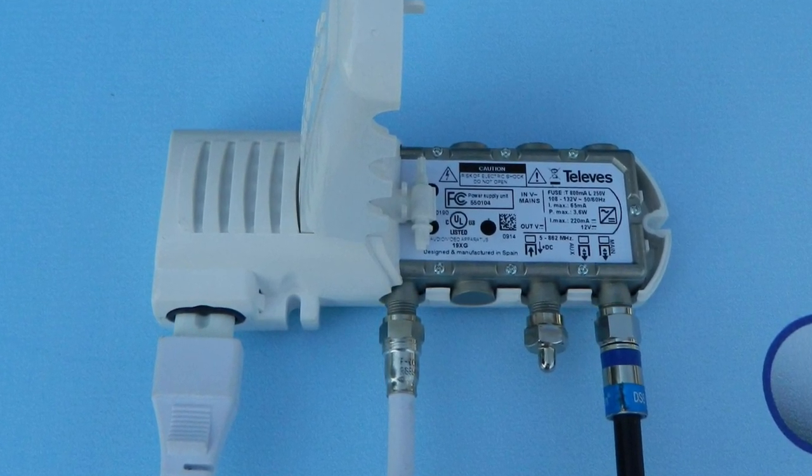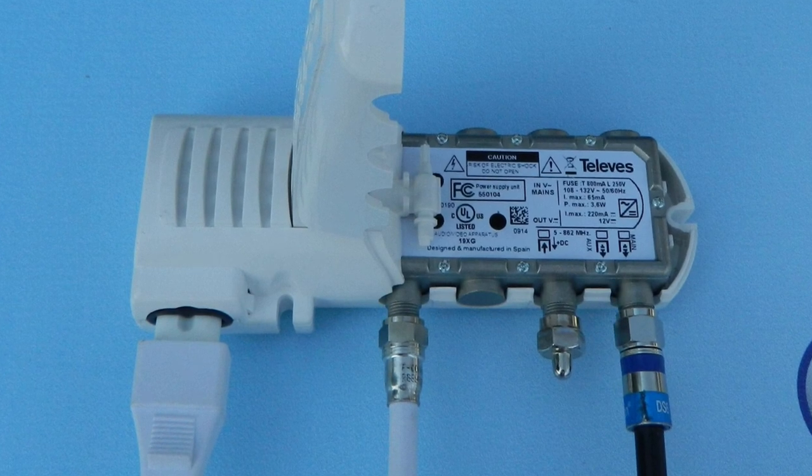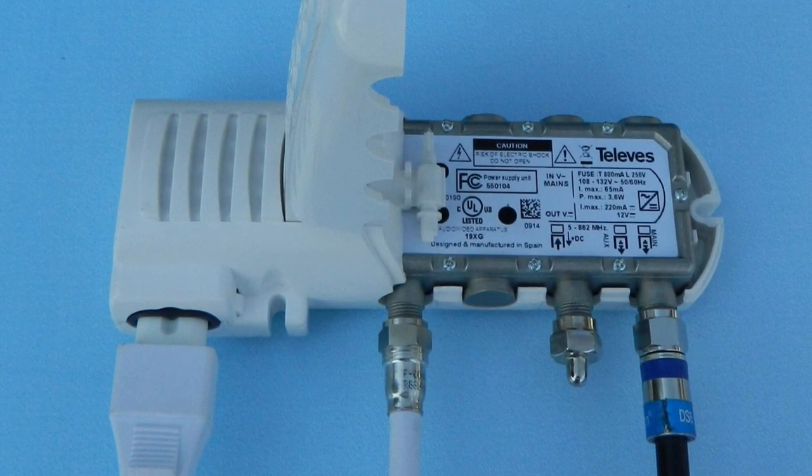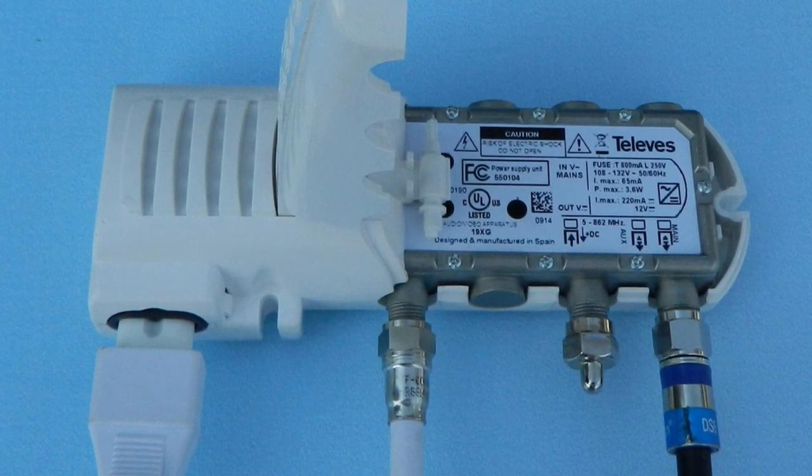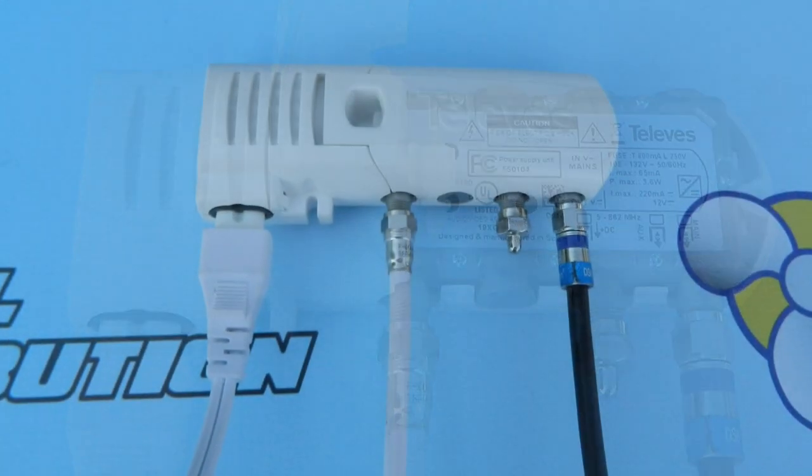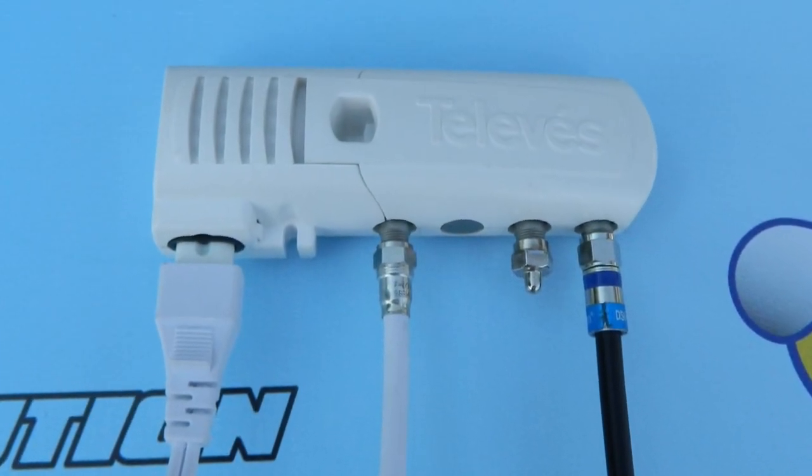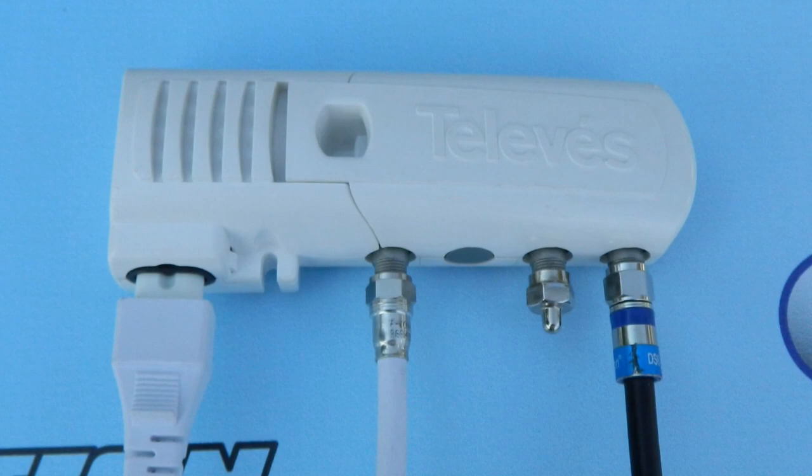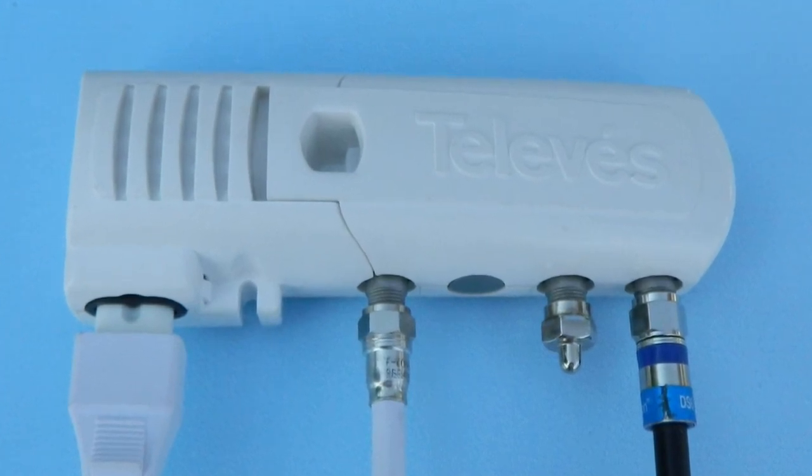Also, in case it's not clear, the input from the antenna is on the left, the output from the TV is on the right, and I've used a terminator cap even though it's not really necessary. The power supply unit is self-terminating. I just like to make sure that dust doesn't get in there.